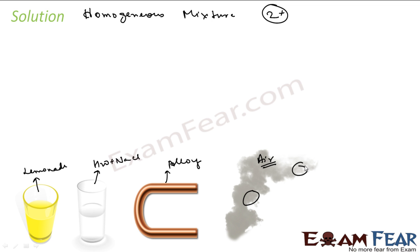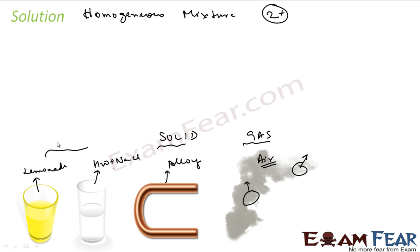But if you take air from two different cities — say Delhi and Mumbai, or London and New York — you will find different compositions because they have different pollution levels. Also note: solution, as the name looks like it is a liquid, but it need not be liquid. These two examples are liquid, this one is solid, and this is gas. So you can have a solution in solid, liquid, and gas form.